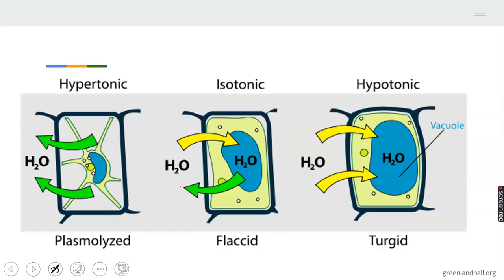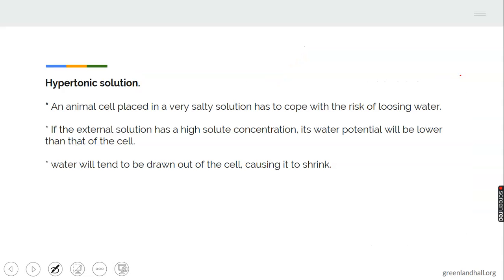This diagram shows isotonic, hypotonic, and hypertonic solutions. Under hypertonic solution, water comes out of the cell, so the cell will plasmolyze — it will shrink as a result of water leaving. In an isotonic solution, there is flexibility; water moves in and out of the cell equally. During hypotonic solution, water goes in and the cell becomes hard.